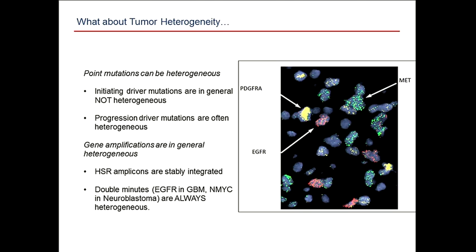Gene amplification is a completely different story. Homogeneous staining regions like HER2 are stably integrated — every daughter cell acquires that amplification. Double minutes — like EGFR in GBM — are present on extrachromosomal plasmids and are always heterogeneous; every single tumor cell has a different number.